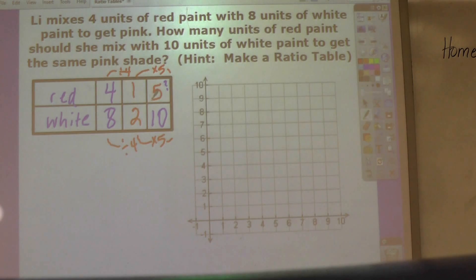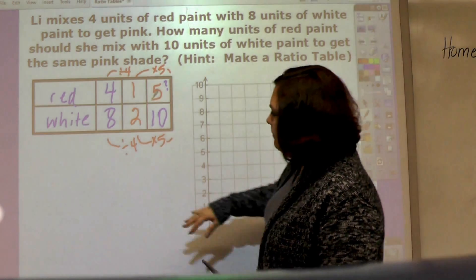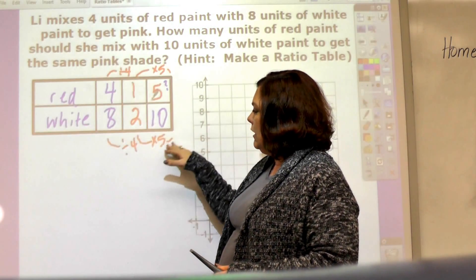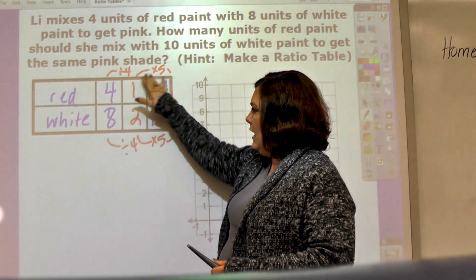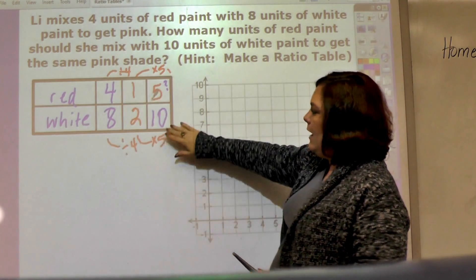To fill in the ratio table, we simplified to 1 half and then we took it by 5 to 10 and to 5. So it's 5 red for 10 white.